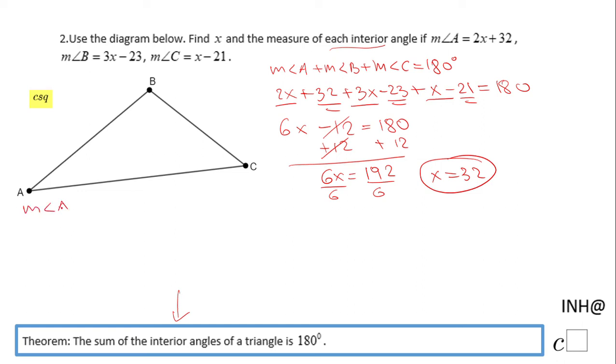Measure of angle A is nothing else than 2x + 32. And if we evaluate this expression, we end up with 96°. The measure of angle A is 96°.